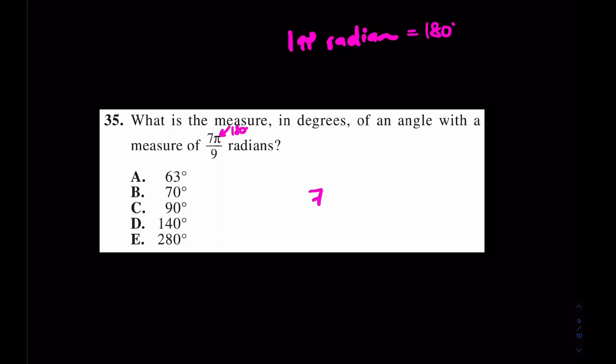You have 7 times 180 over 9. And at that point you don't even really need a calculator because what's 7 ninths of 180? I'm going to go with D, 140. That's good for number 35.